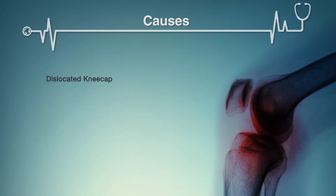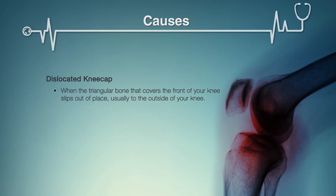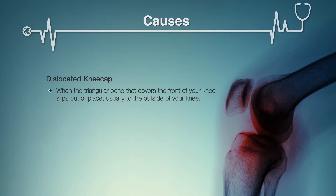Dislocated kneecap develops when the triangular bone or patella that covers the front of your knee slips out of place, usually to the outside of your knee. In some cases, the kneecap may stay displaced and may even be visible through the skin.